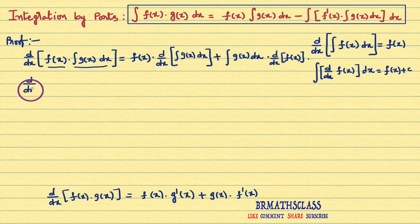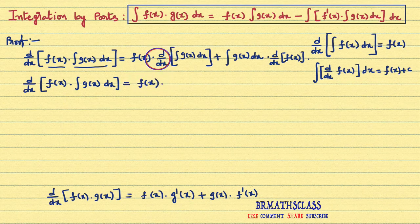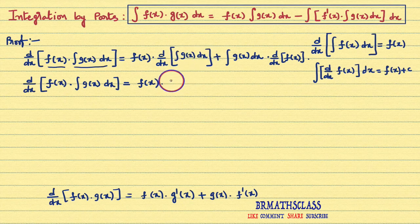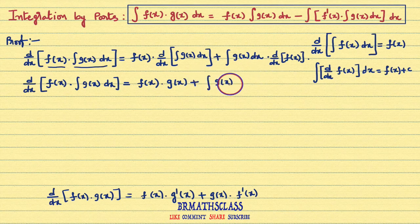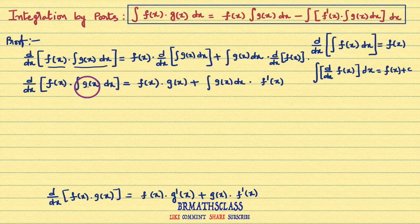I hope you are understanding. On the left hand side I am writing this as it is: d/dx of f(x) into integral of g(x) dx, equal to f(x) into... you observe here, derivative of integral of g(x) dx. By our first formula, derivative of integral of f(x) dx is f(x), so derivative of integral of g(x) dx is g(x). Plus, integral of g(x) dx into derivative of f(x), denoted f'(x). Now from this equation, I will isolate f(x) times g(x). If you take this whole expression to the other side, you will get f(x) times g(x).